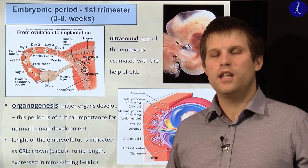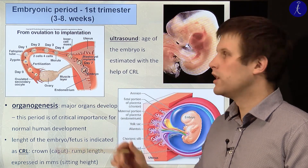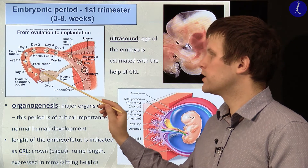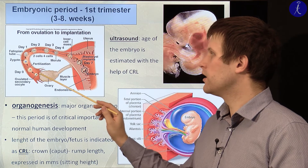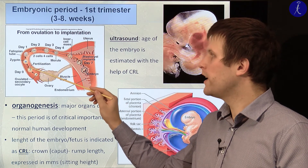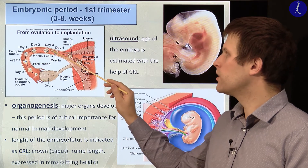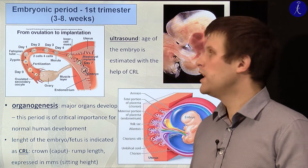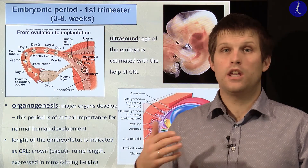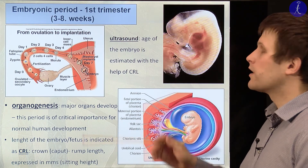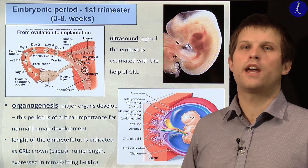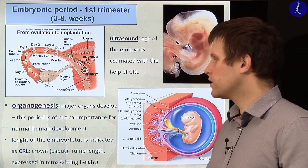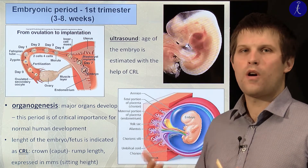After ovulation, the secondary oocyte is fertilized somewhere in the oviduct. Many divisions of the zygote occur — the morula develops and finally the blastocyst. The blastocyst will be implanted into the endometrium and development of the embryo continues. With ultrasonography we have the ability to detect the embryo and implantation, and to estimate the age and growth.